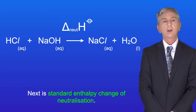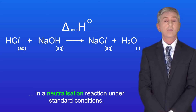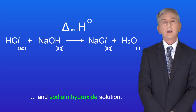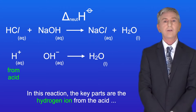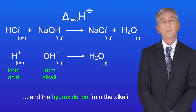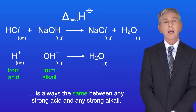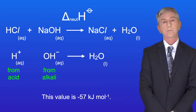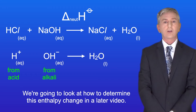Next is standard enthalpy change of neutralization. This is the enthalpy change when one mole of water is formed in a neutralization reaction under standard conditions. I'm showing you the equation for this reaction here with hydrochloric acid and sodium hydroxide solution. In this reaction, the key parts are the hydrogen ion from the acid and the hydroxide ion from the alkali. So the standard enthalpy change of neutralization is always the same between any strong acid and any strong alkali, and this value is minus 57 kilojoules per mole. This reaction is exothermic, and we're going to look at how to determine this enthalpy change in a later video.